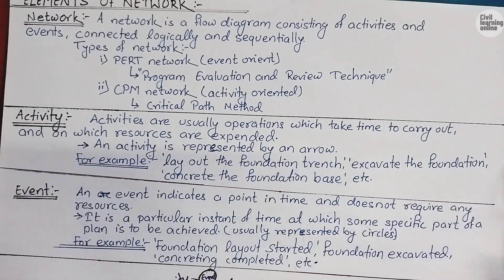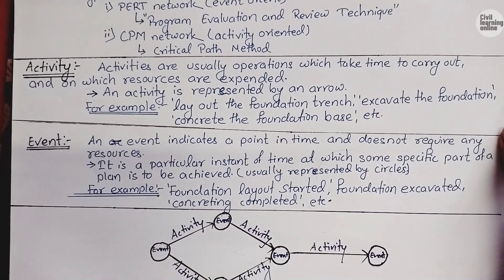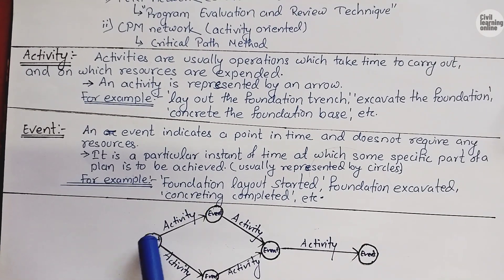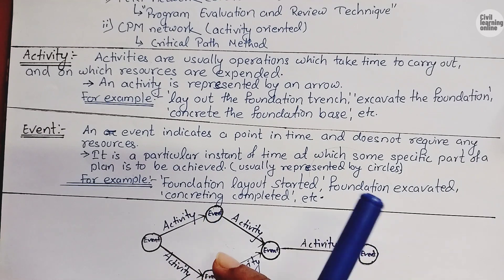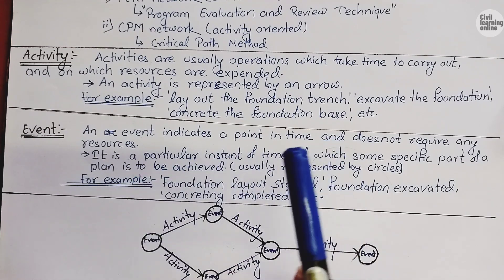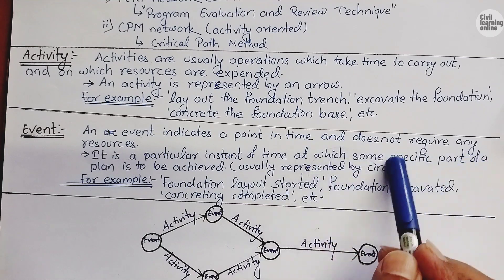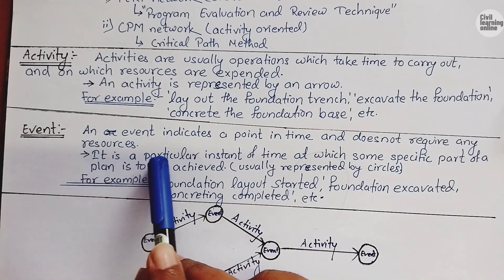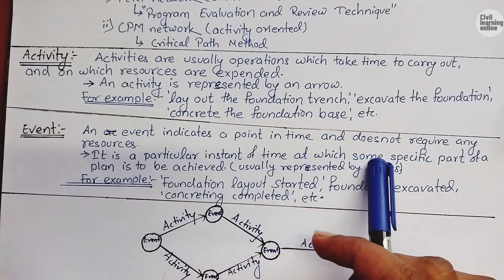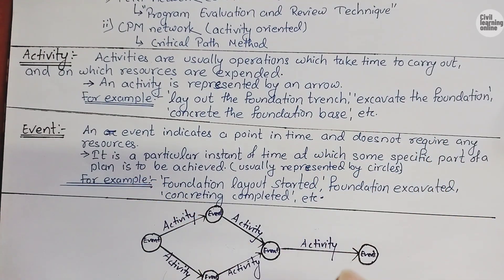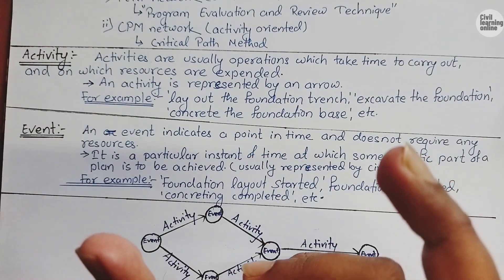Activity is represented by an arrow. Suppose a project is started — the start of a project can be an event. After starting that project we have to perform different activities, and after completion of that activity there will be an event in which there is no requirement of any resources. An event indicates a point in time and does not require any resources. It is a particular instant of time at which some specific part of the plan is to be achieved.